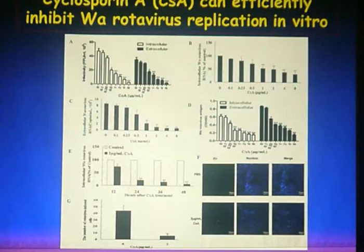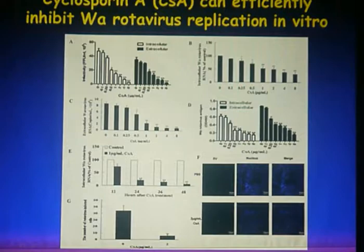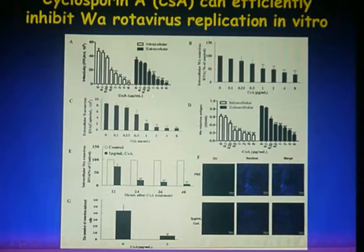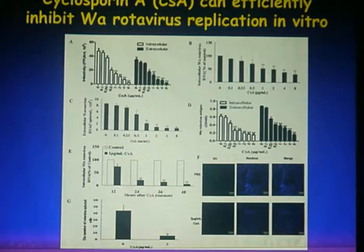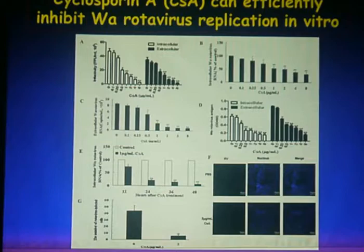Interestingly, we found that cyclosporin A can efficiently inhibit rotavirus replication in cell models. A statistically significant reduction in infectivity was found with cyclosporin A treatment in a dose-dependent manner. In order to confirm that cyclosporin A inhibited rotavirus infectivity, we also evaluated rotavirus antigen and RNA expression by ELISA and QRT-PCR respectively. Consistent with these results, cyclosporin A treatment significantly reduced rotavirus RNA and antigen levels.